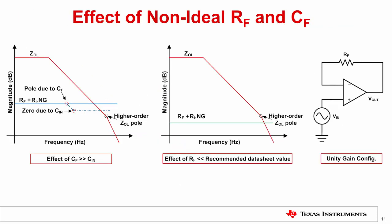Now, the next point is very important. Do not add a feedback capacitor unless the circuit analysis requires it. If the input capacitance is negligible and a large feedback capacitance is added, the pole will occur before the zero. The net effect is a reduction in the feedback transimpedance, causing the loop gain crossover to occur closer to the higher-order ZOL pole, which reduces the amplifier's phase margin. Furthermore, the feedback resistance at a given closed-loop gain should not be too far below the recommended datasheet value, since this can also cause the loop gain crossover to occur after the higher-order ZOL pole, reducing phase margin.